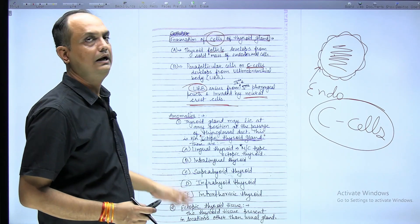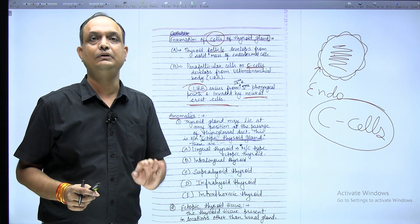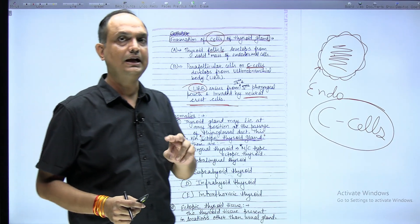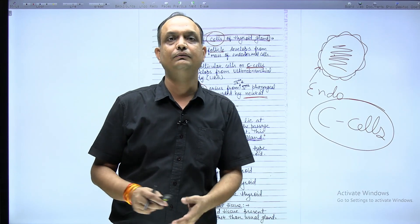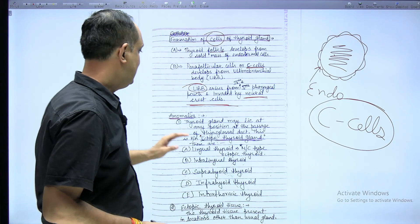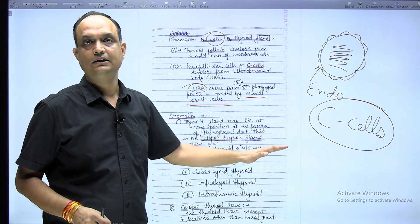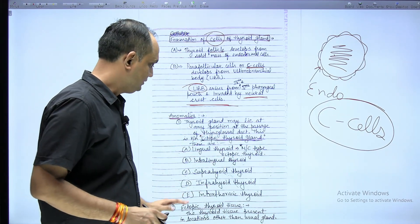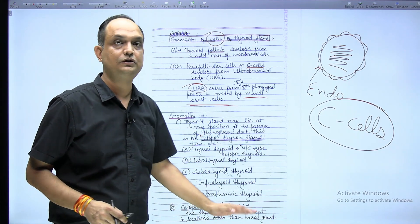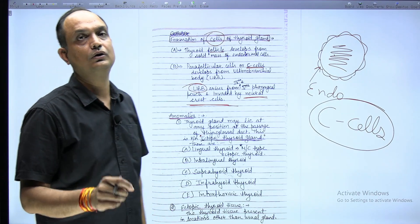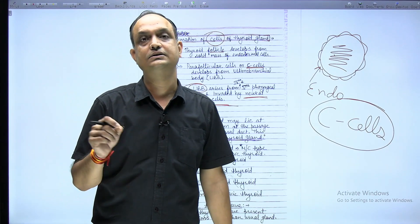Now at the end you have to write down the anomalies. There are three types of anomaly: one is known as ectopic thyroid gland, second is ectopic thyroid tissue, and third is thyroglossal duct cyst.